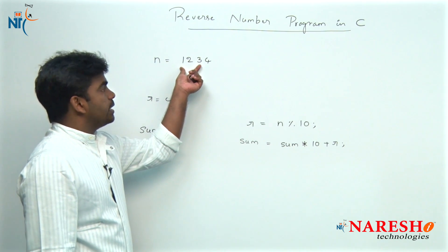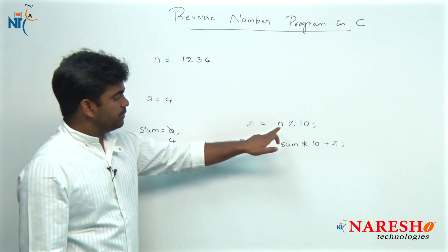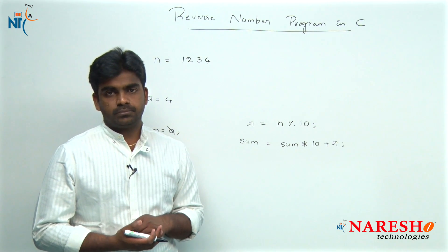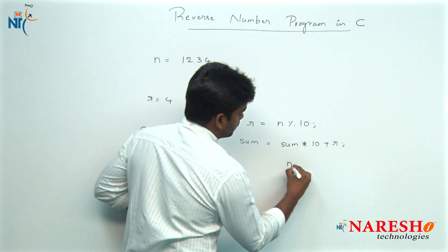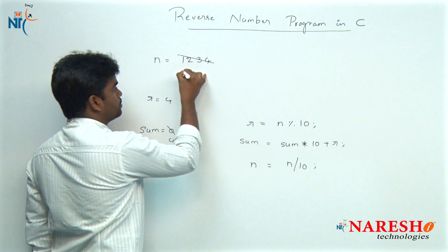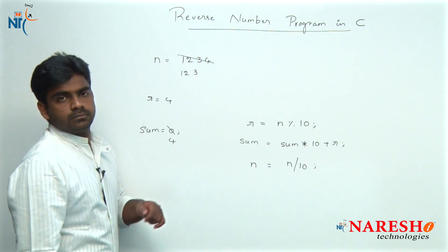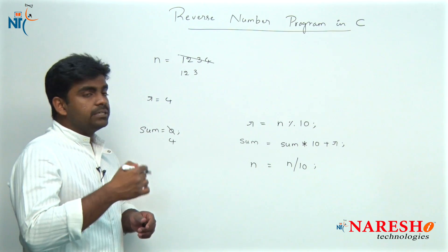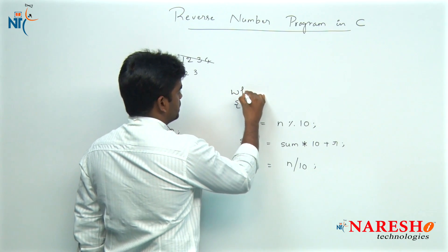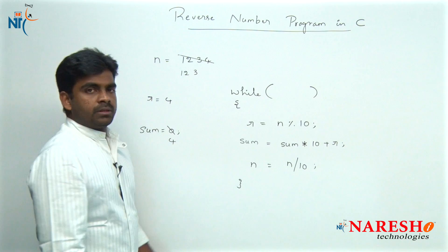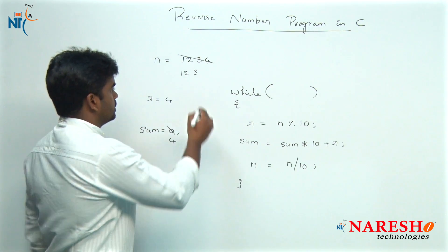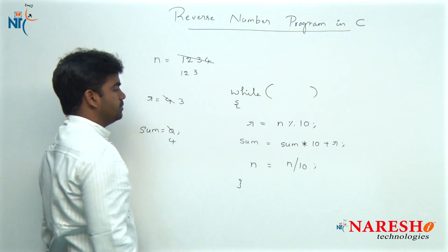Next we need to work with 123. To get 123, we perform N divided by 10, which gives the quotient instead of the remainder, and that is stored back into N. So N becomes 123 and the loop repeats. In the next iteration, 123 mod 10 gives the next digit, which is 3. So R value is 3.